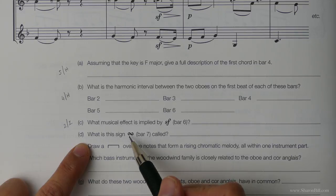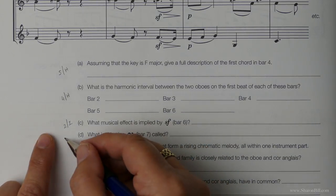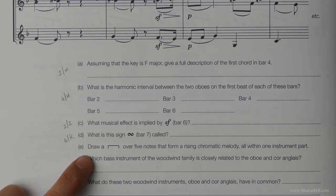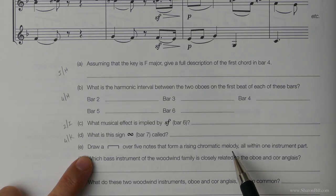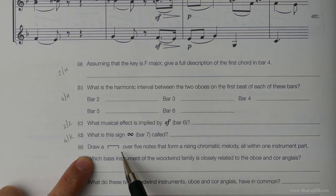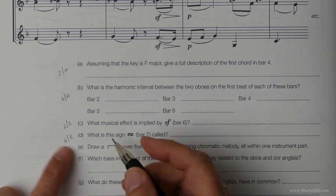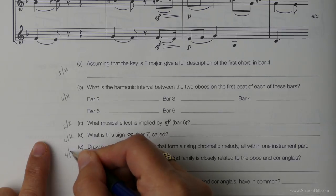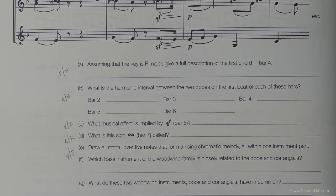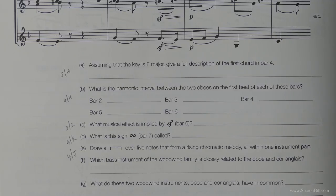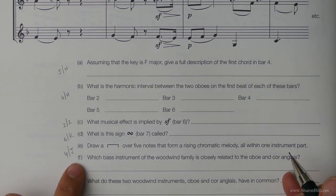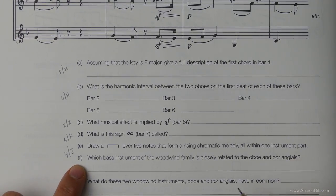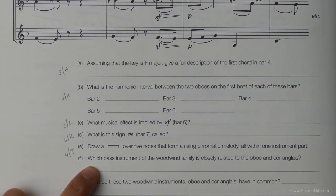We're asked what this sign means and we first come across this in grade 4 section K. We're asked to draw a bracket over five notes that form a rising chromatic melody all in one instrument path. So we're looking for five next door notes that make a chromatic scale. And you'll find that first of all in grade 4 section J. However you're going to have to do a bit of detective work to find it within this piece. They sort of sometimes sneakily hide the most obvious point with that.